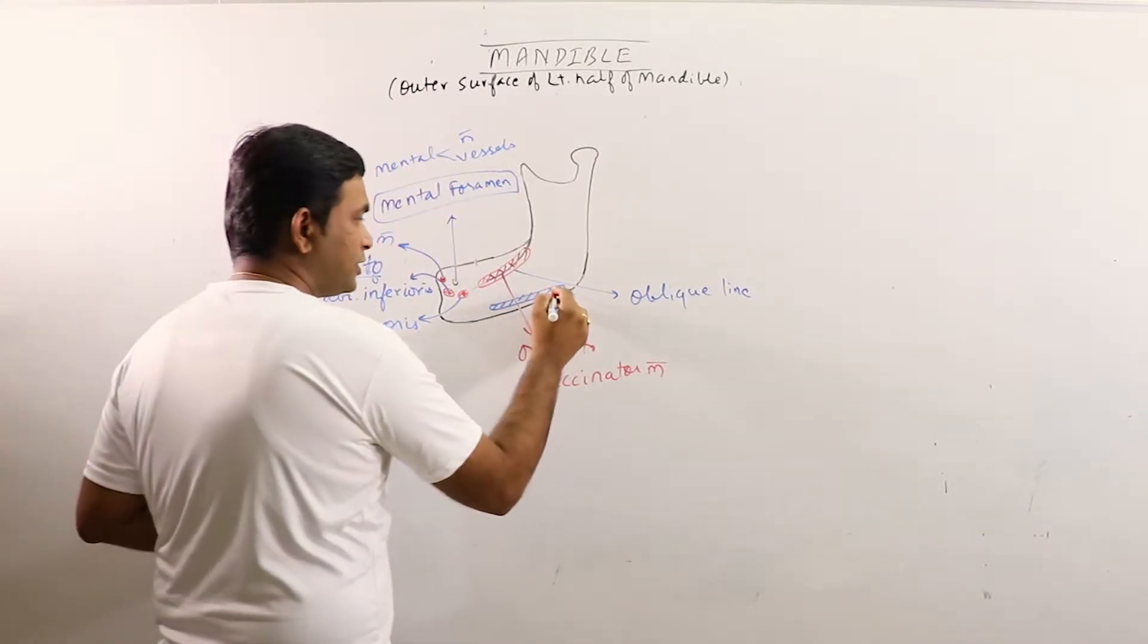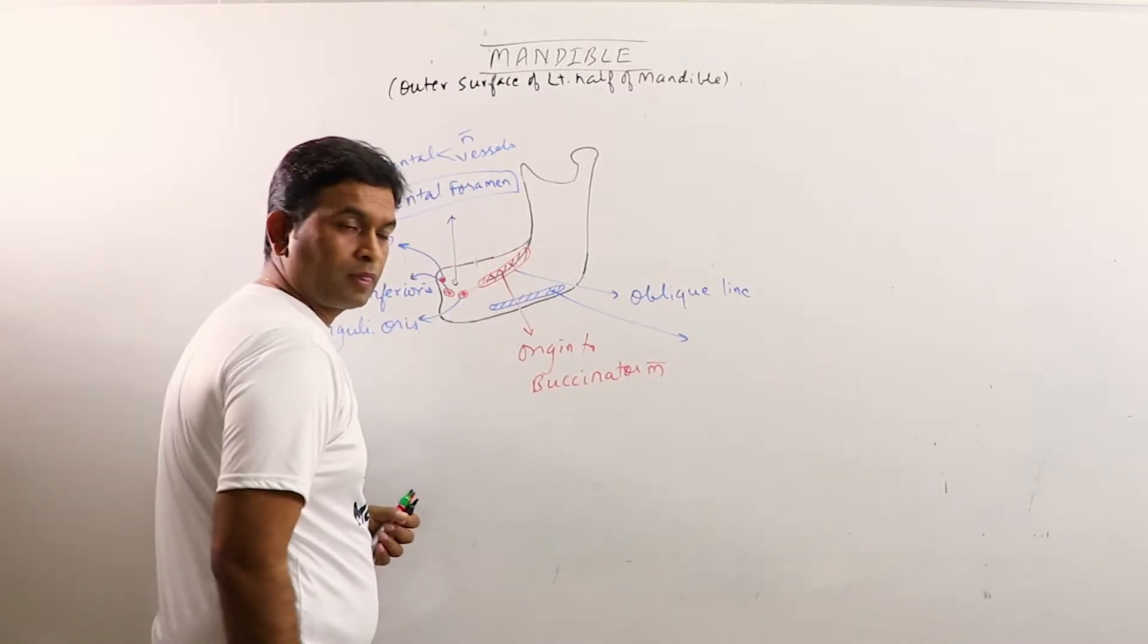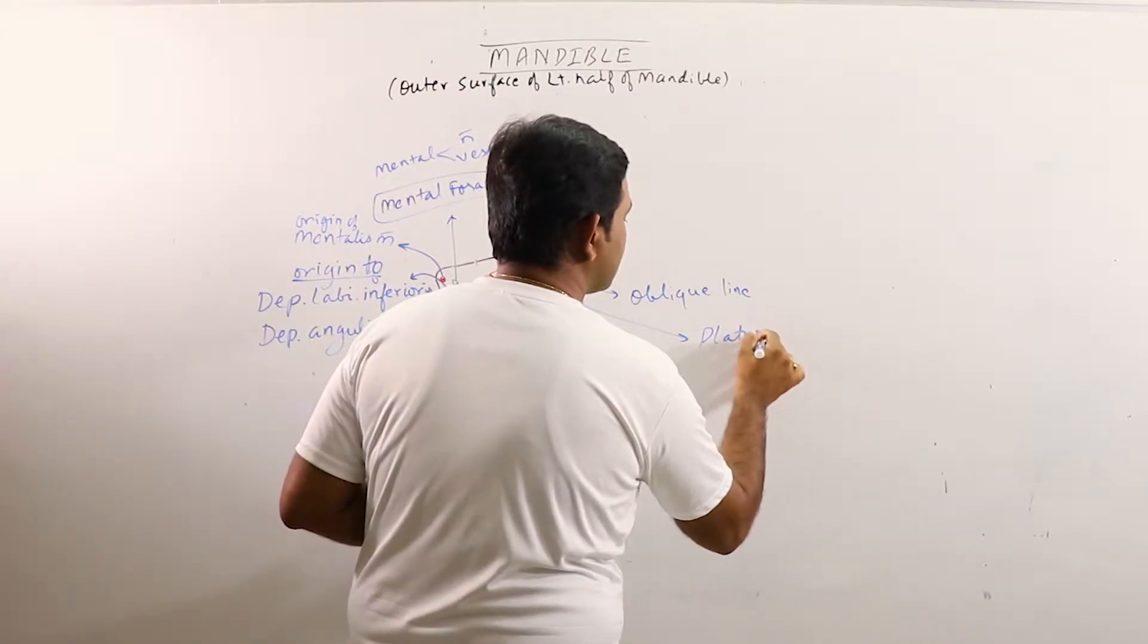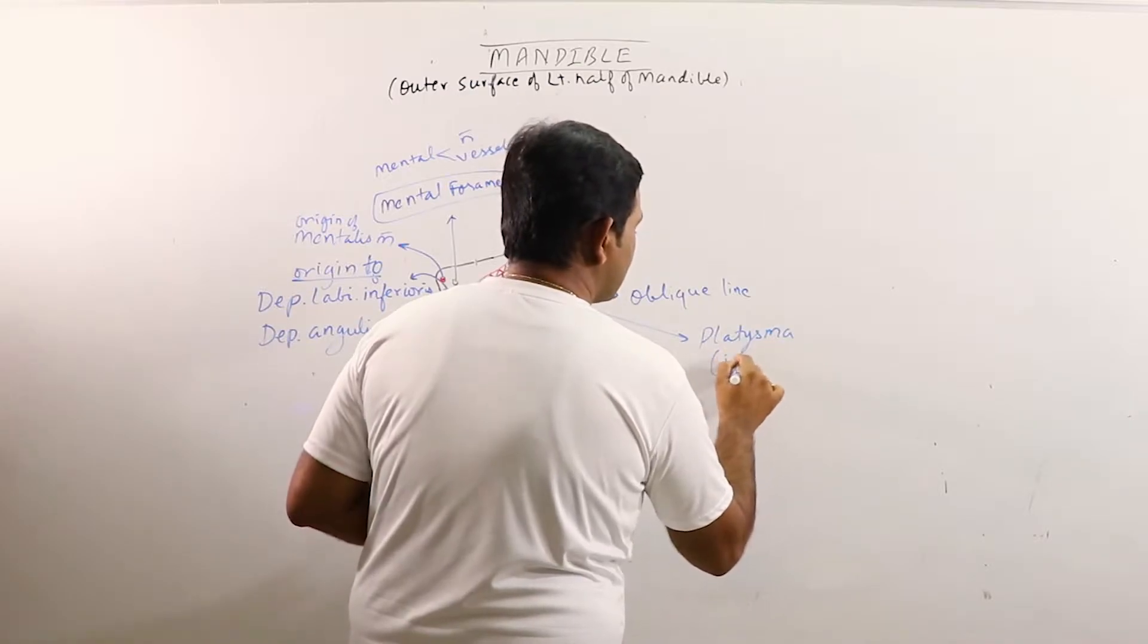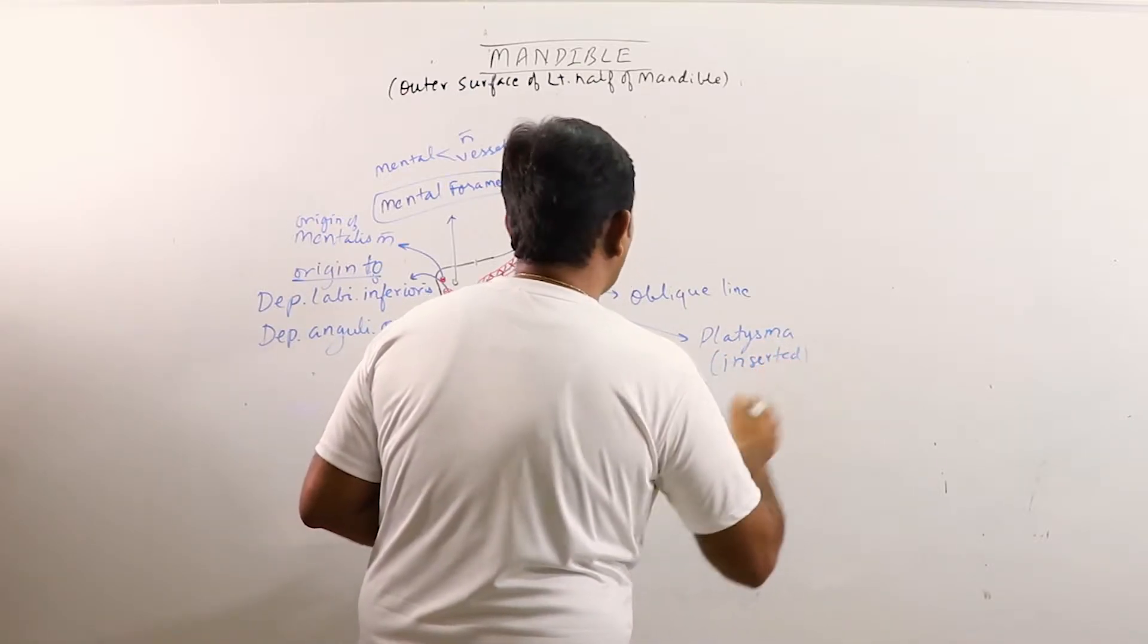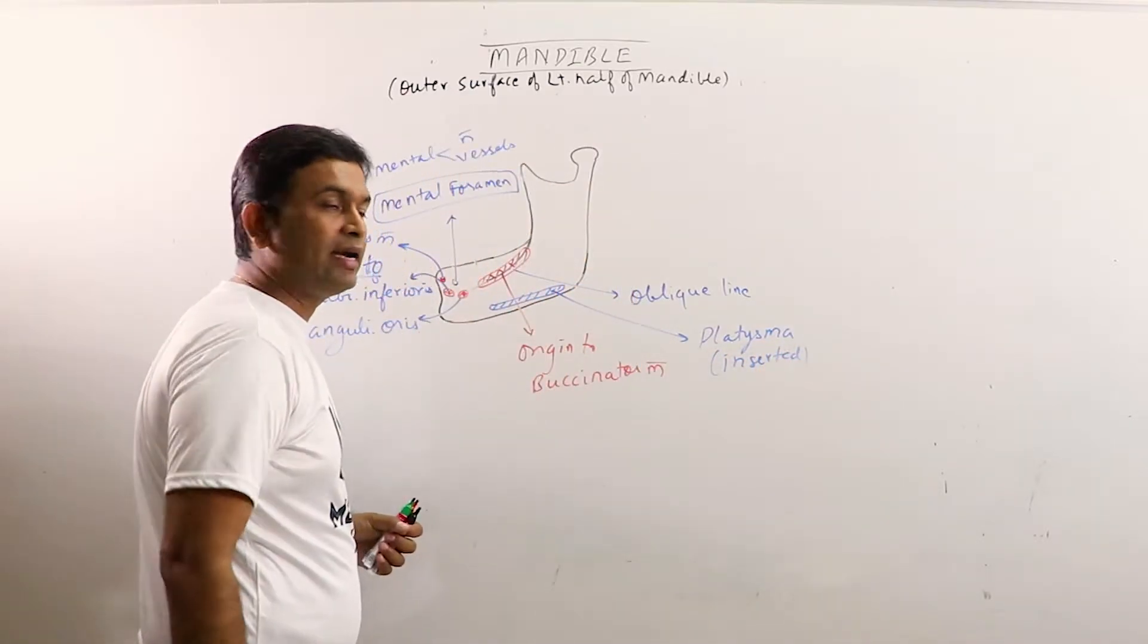This is an insertion. The platysma muscle is inserted along the lower border of the mandible.